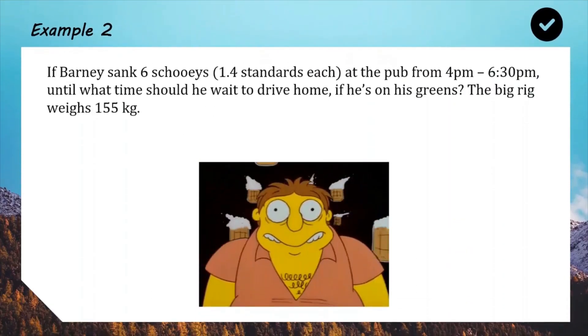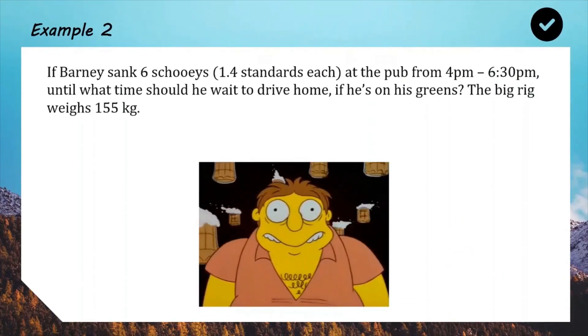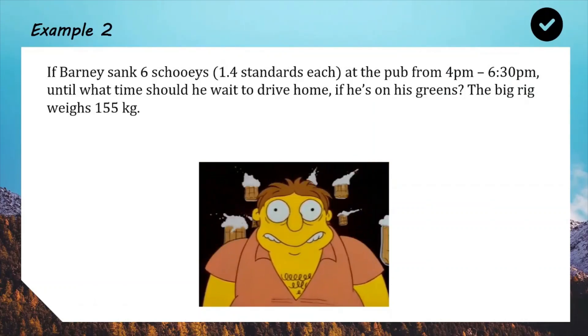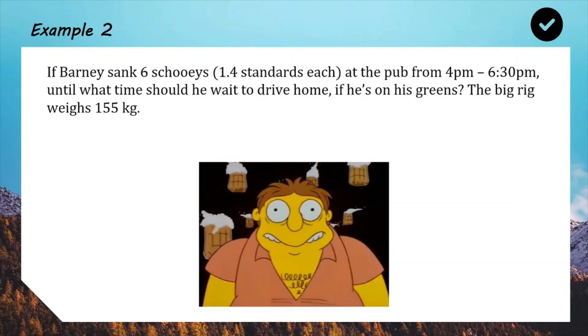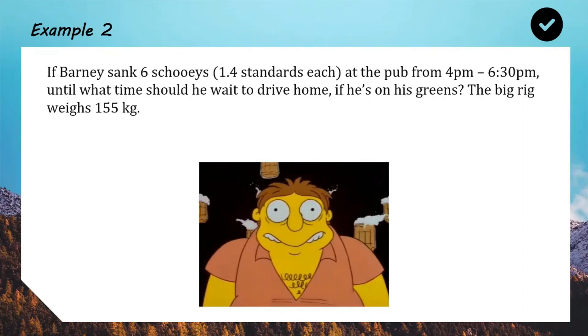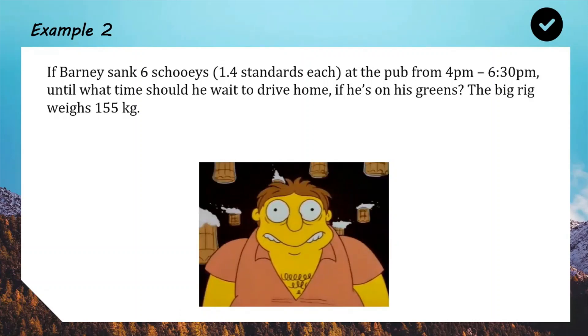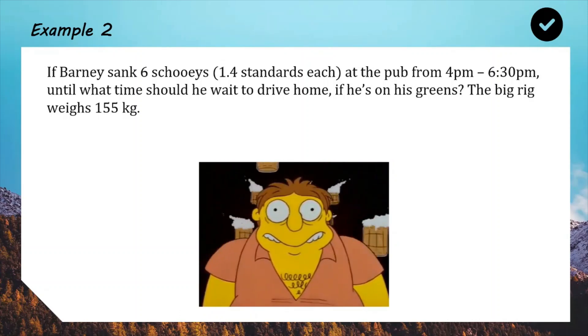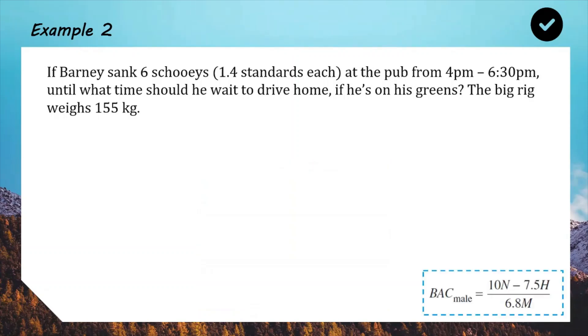Now for our second example, we have Barney sank six scooners, which in Australian means a glass of beer, and they're 1.4 standards each, and he was at the pub from 4 till 6.30 p.m. So, until what time should he wait to drive home, given that he's on his green peas, which means he needs to have a BAC of 0? The big rig weighs 155 kg, so that's his mass. Once again, here's the formula. If you'd like to have a go by yourself, I encourage you to pause and see how you go.